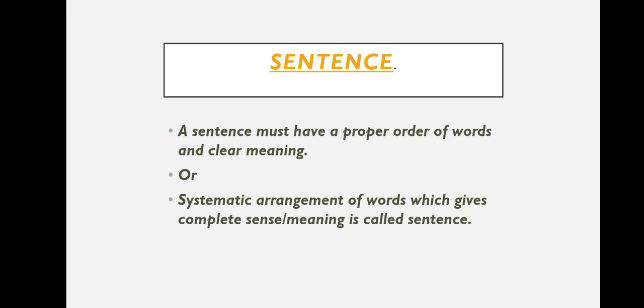Then after framing, after taking letters we make a word. So how should the words be arranged? If we arrange the words in a proper way they give us a complete meaning. A sentence must have a proper order of words and clear meaning. A sentence is a systematic arrangement of words which gives complete sense or complete meaning.